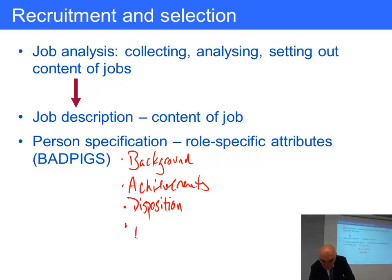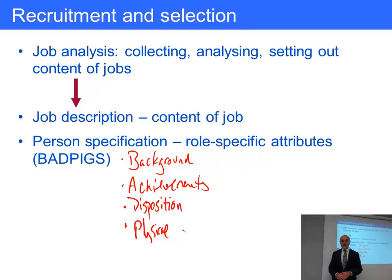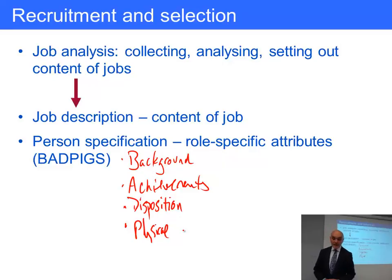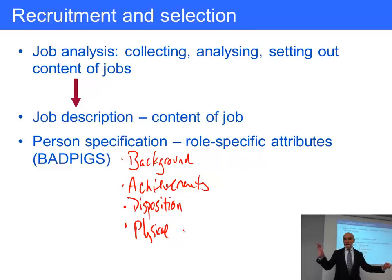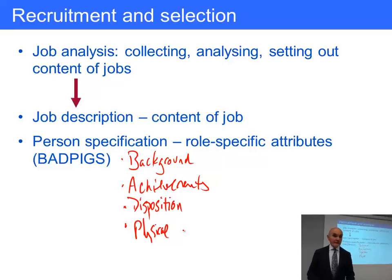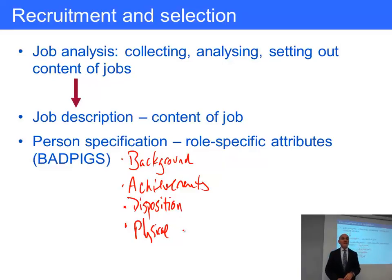P is for physical. We have to be careful here as many countries have legislation protecting people who may be disabled. However, some jobs have legitimate physical requirements. For example, it's very important that an airline pilot is not colourblind, since they need to distinguish the red and green lights on aircraft wings to know whether a plane is coming towards them or going away. If a job involves heavy lifting, there may be a health and safety issue about employing someone with a bad back.